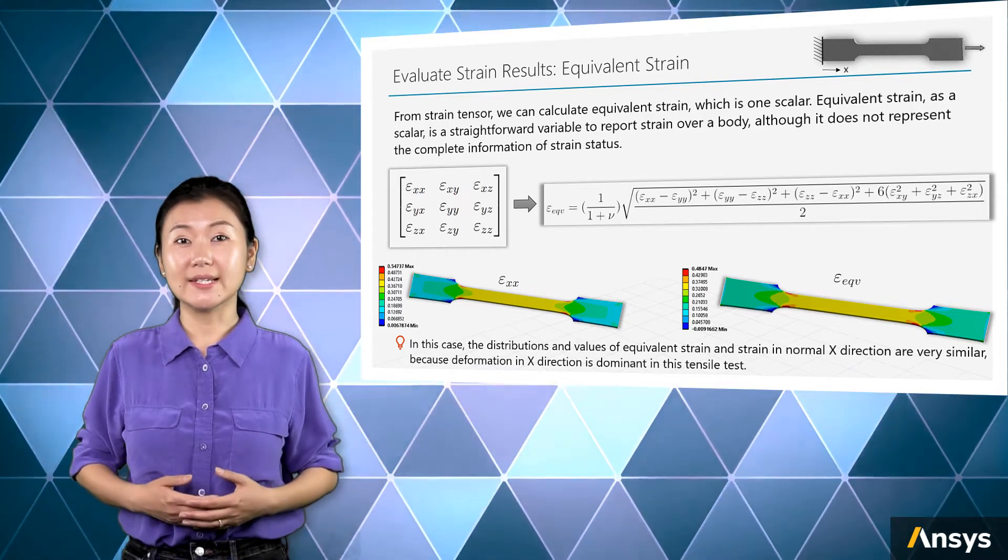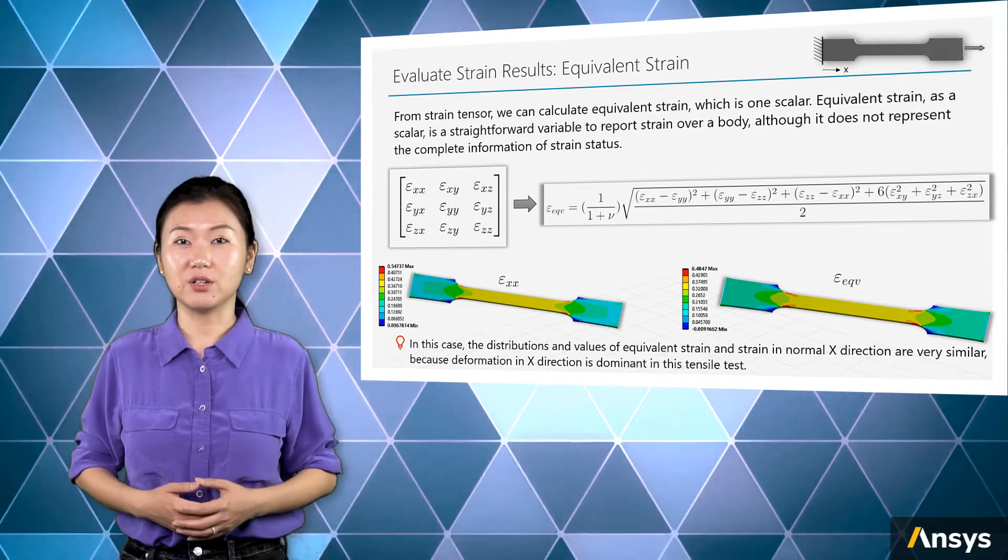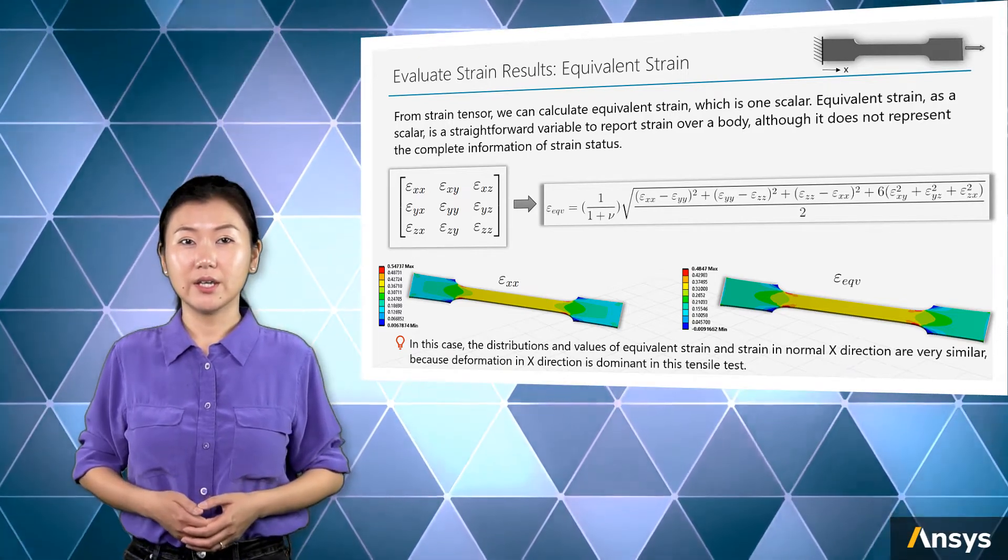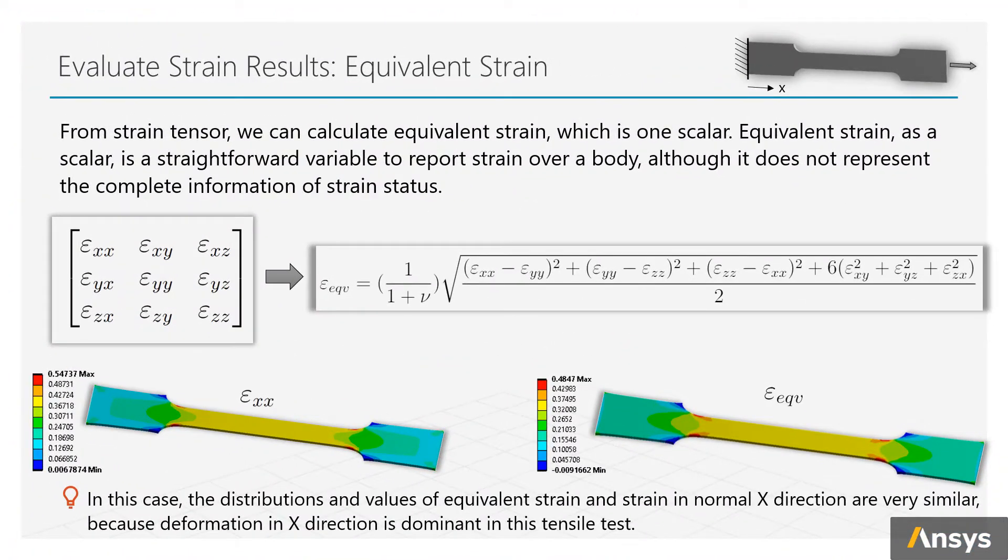Although as an equivalent value, it does not represent the complete information of strain status. Here you can see that the equivalent strain is calculated based on the 9 strain components. The parameter mu here is the Poisson's ratio of a material.